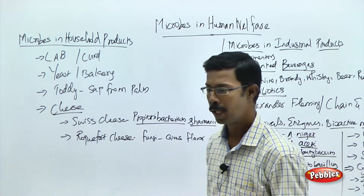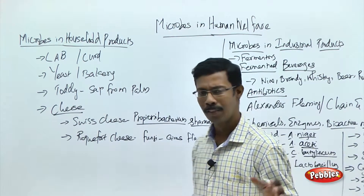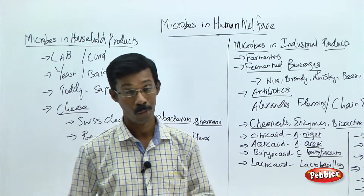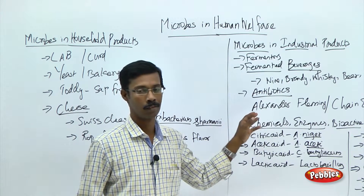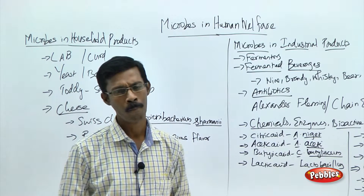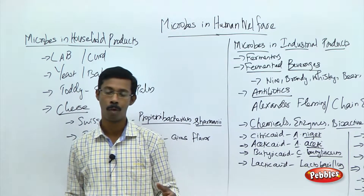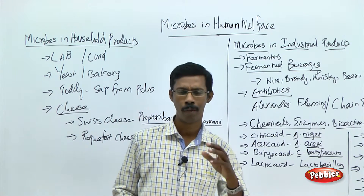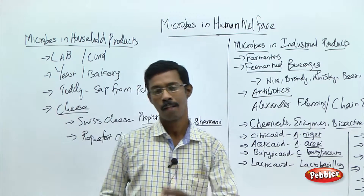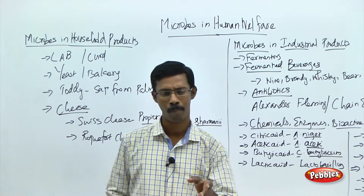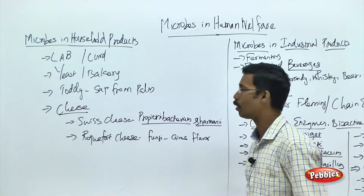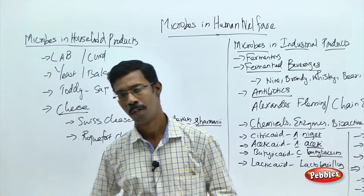That is what we are going to discuss in this chapter — microbes in human welfare. We are going to see how microbes are involved in making food products, how we use them to make beverages including alcoholic beverages, how we can form chemicals and bioactive materials from microbes, how microbes can treat sewage, and how microbes can be used as biocontrolling agents or biopesticides. We are going to start with microbes in household products.